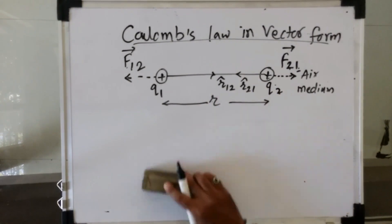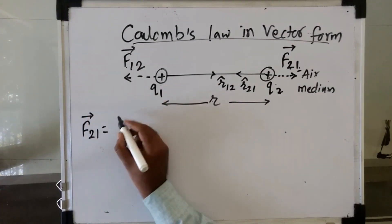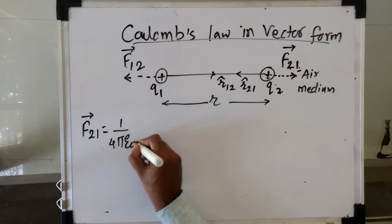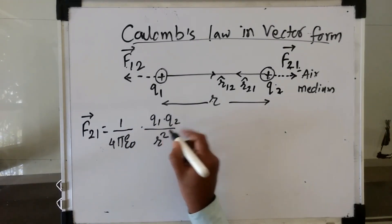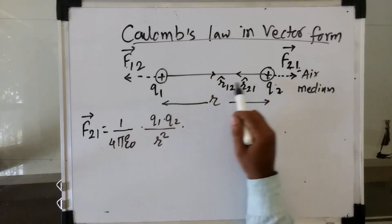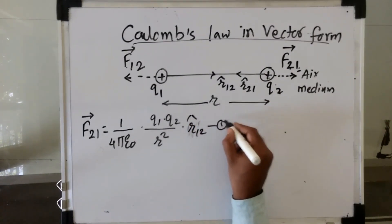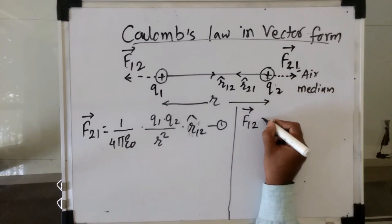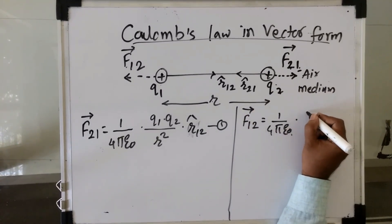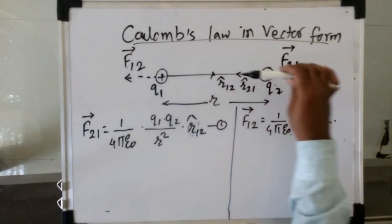Now we will write down the equations according to Coulomb's law. F21 bar — force acting on second due to first — is given by: (1 / 4πε₀) × (Q1 × Q2 / r²) × R12 cap. This is equation 1. Similarly, F12 bar — force acting on first due to second — is equal to: (1 / 4πε₀) × (Q1 × Q2 / r²) × R21 cap.